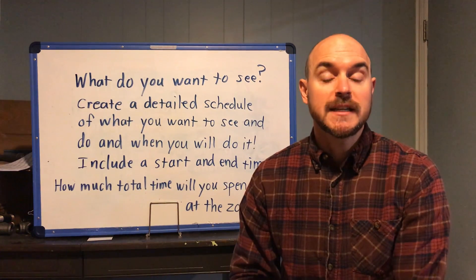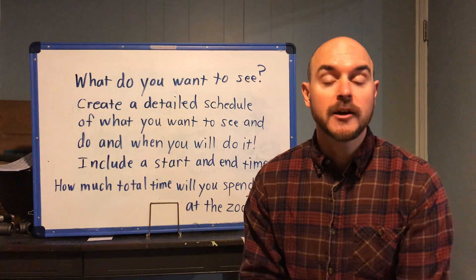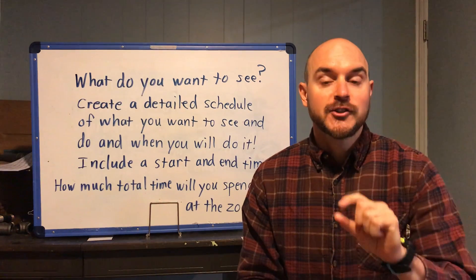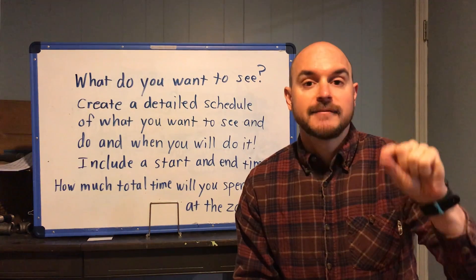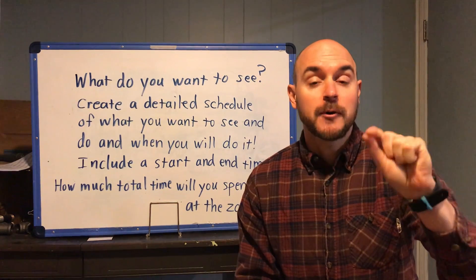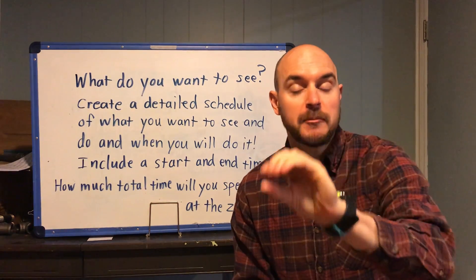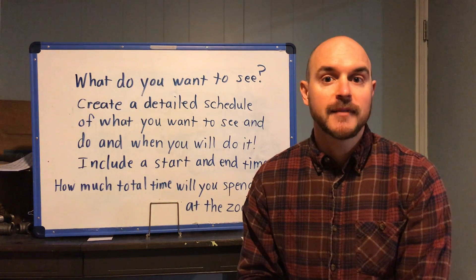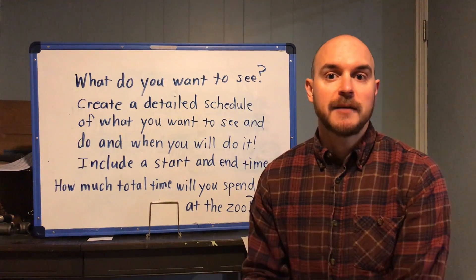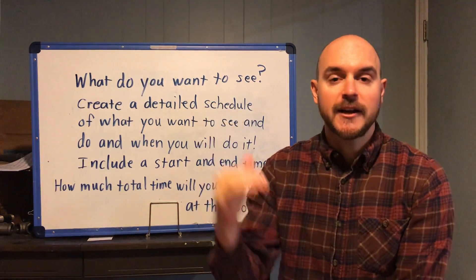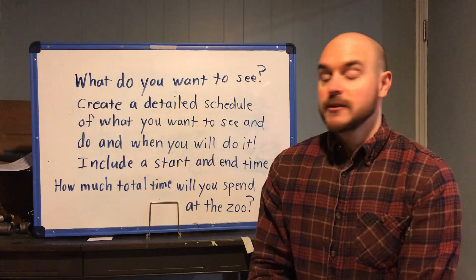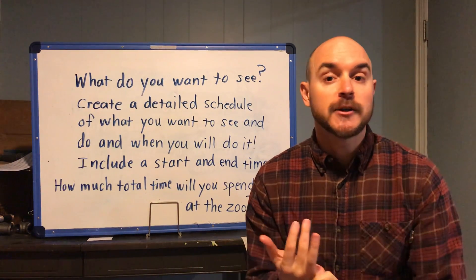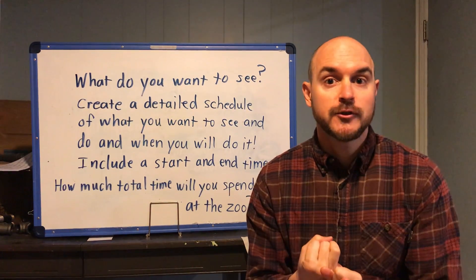For example, if I want to go see the koala bears I'm going to put on my chart starting at 10 o'clock I want to see the koala bears, and I'm going to be done looking at the koala bears at 10:15. A start and an end time for each item on your list. That should include any special programs you're choosing to do.